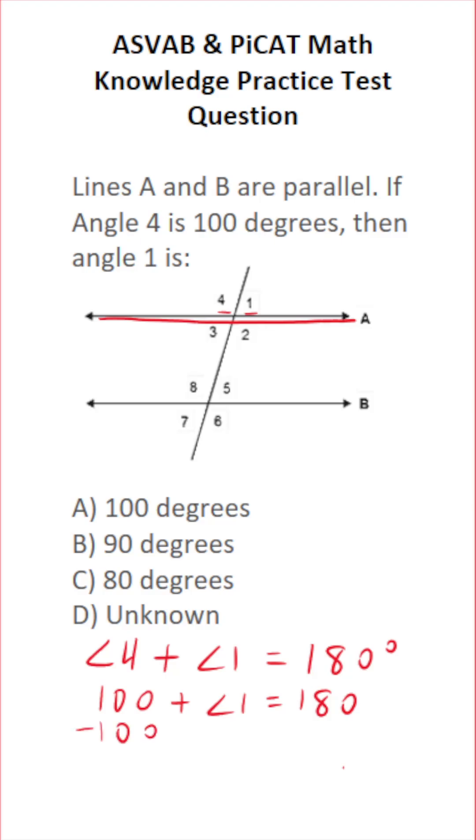To solve for angle 1, all we're going to do is subtract both sides by 100. In doing so, this crosses out, leaving us with angle 1 over here. 180 minus 100 is 80. So angle 1 is C, 80 degrees.